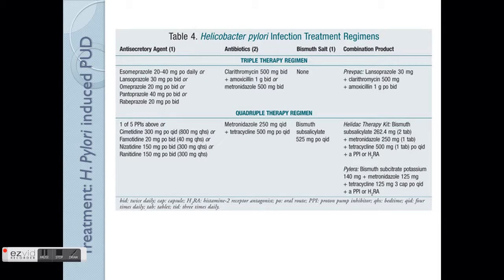Here we talk about triple therapy and quadruple therapy. These two regimes are targeted mainly for H. pylori-induced PUD. Since H. pylori is a bacteria, you need antibiotics. The prerequisite for starting triple therapy is that the doctor must determine whether the patient's PUD is related to H. pylori — they'll do tests like the UREAse test. If confirmed positive, only then will they start the therapy because of the antibiotics involved. If there's no H. pylori, there's no point using antibiotics.